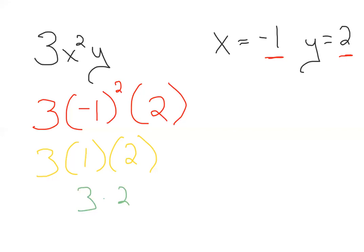1 times 1 is 1. So we end up with 3 times 1 times 2. Now we can go left to right. So 3 times 1 is 3 times 2, and 3 times 2 is 6. So 3x squared y, when x equals negative 1 and y equals 2, equals 6.